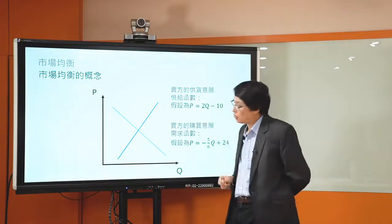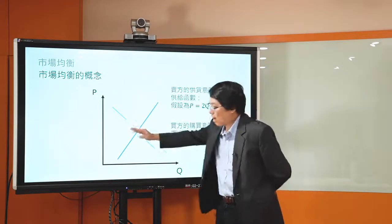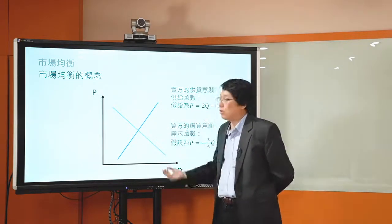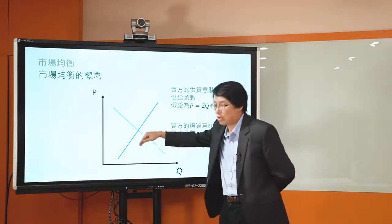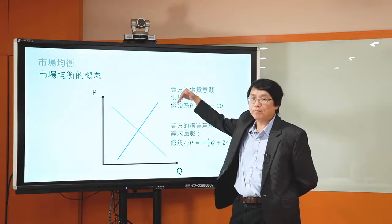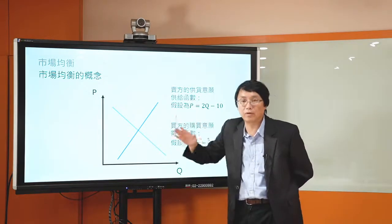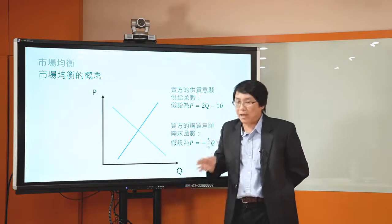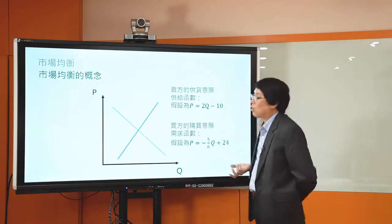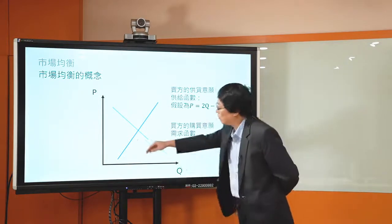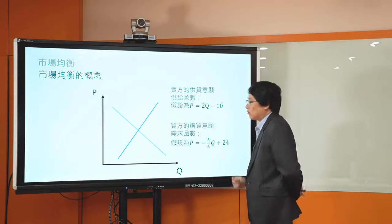要利潤極大化，所以廠商會follow P等於MC的條件，也就是價格等於邊際成本，在這個條件下來決定他的產量。當價格比較高的時候，他願意供給的量也會越高。那為什麼供給線是正斜率的呢？因為邊際成本線是正斜率的，邊際成本遞增，背後隱含的是邊際生產力遞減。